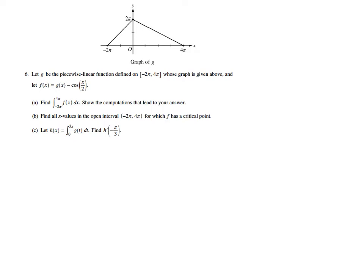In part A, they want us to evaluate the definite integral of f(x) from negative 2π to 4π, and then they want us to make sure we show all our work. So because f(x) is defined as g(x) minus cosine of x over 2, then the integral will just be those two separate integrals subtracted.